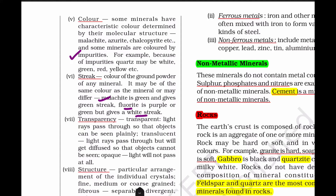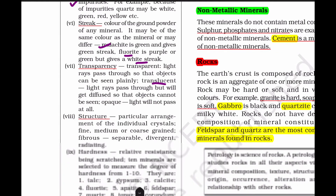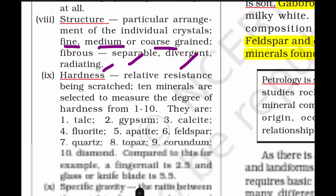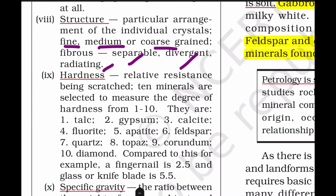Next is transparency - a mineral can be translucent. Next is structure - this is the atomic arrangement, which can be non-separable, divergent, or radiating, and can be fine, medium, or coarse-grained. Next is hardness - the particular hardness of a mineral is measured on a scale of 1 to 10.